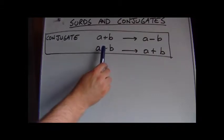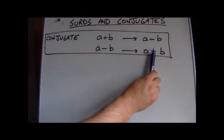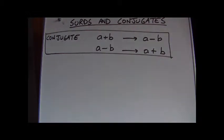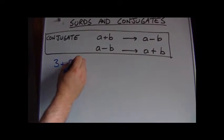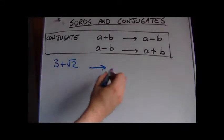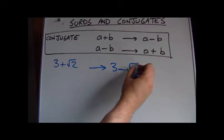Alternatively if we've got a negative sign here, the conjugate is what we get when we change it to a plus. So if we have an expression with a surd in it, for example 3 plus root 2, the conjugate of that is 3 minus root 2, really simple.